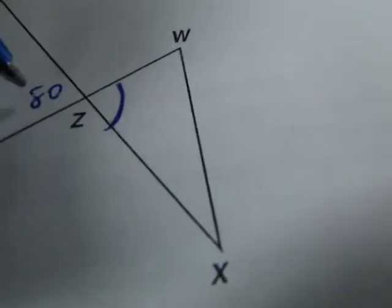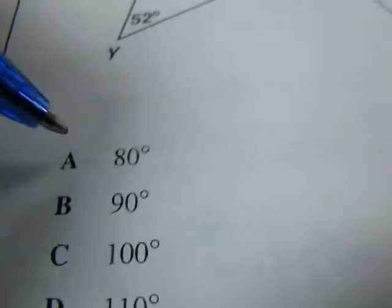So, the one we're trying to find, this one, has to be congruent, therefore, it is 80. The answer is A, 80.